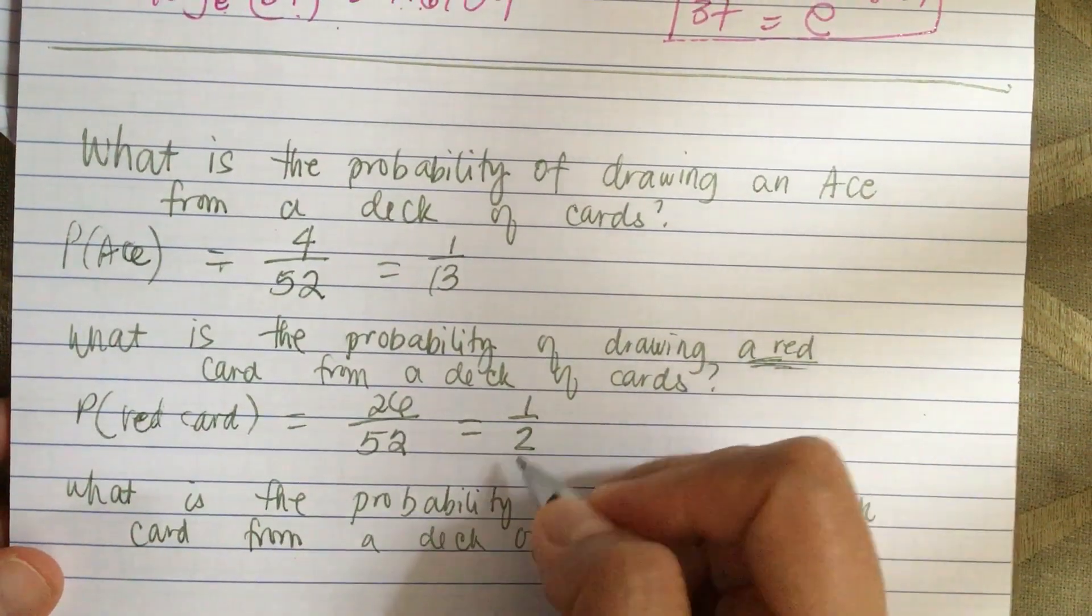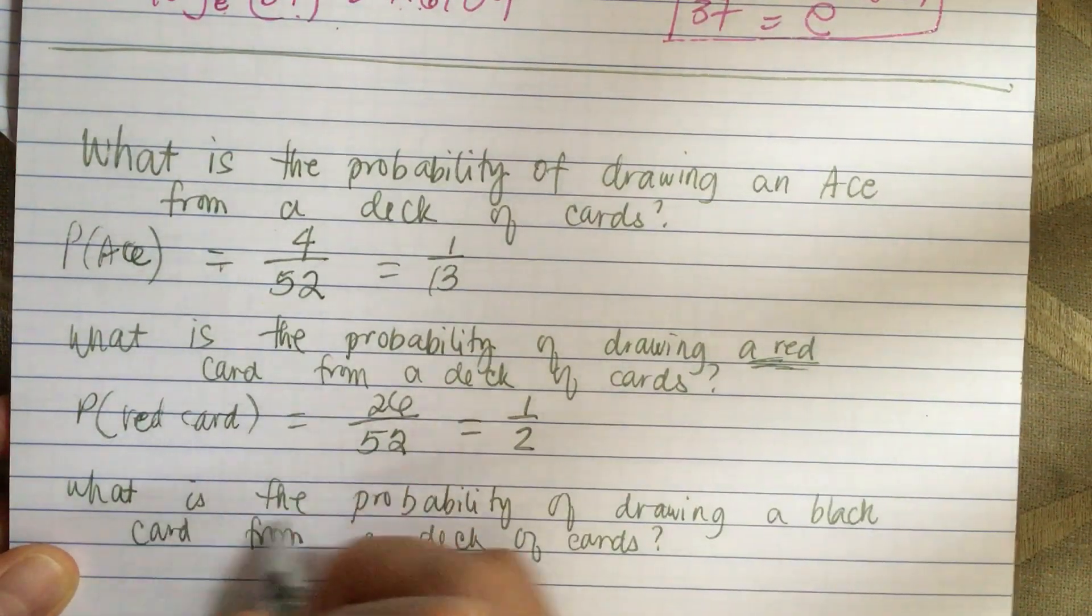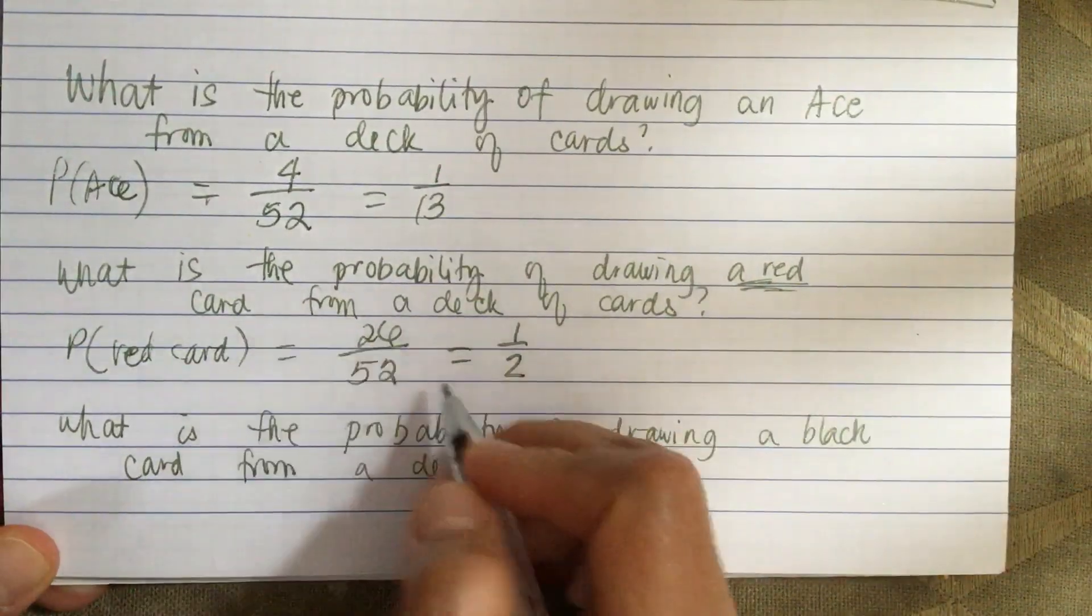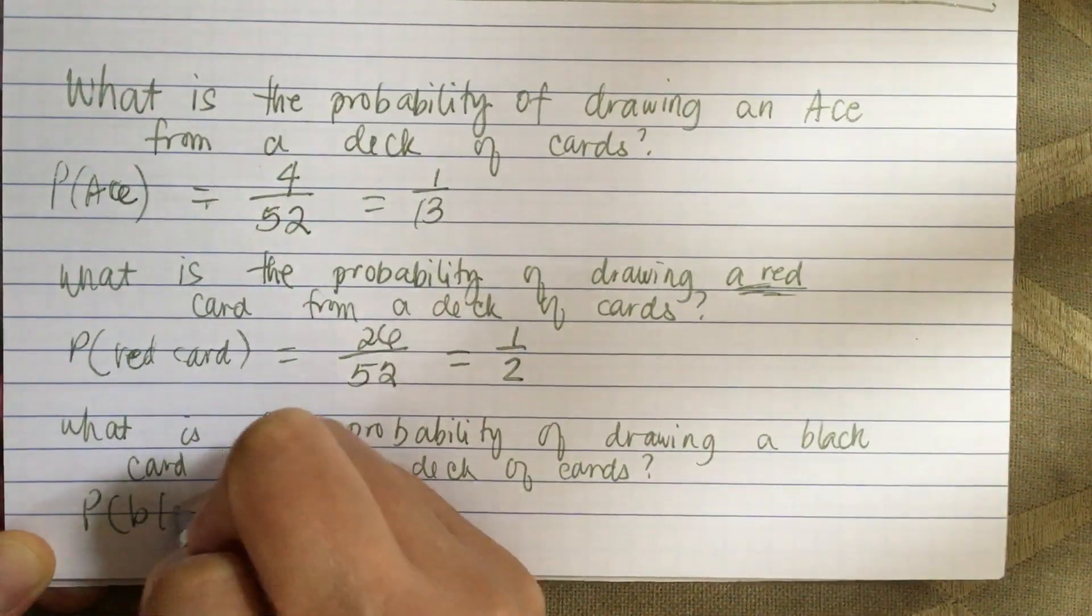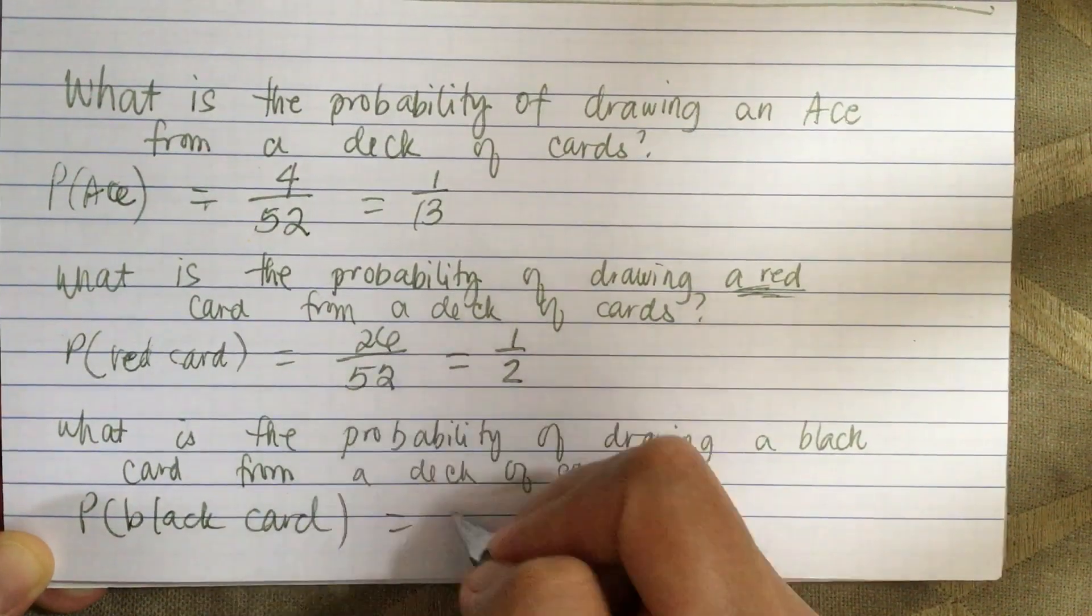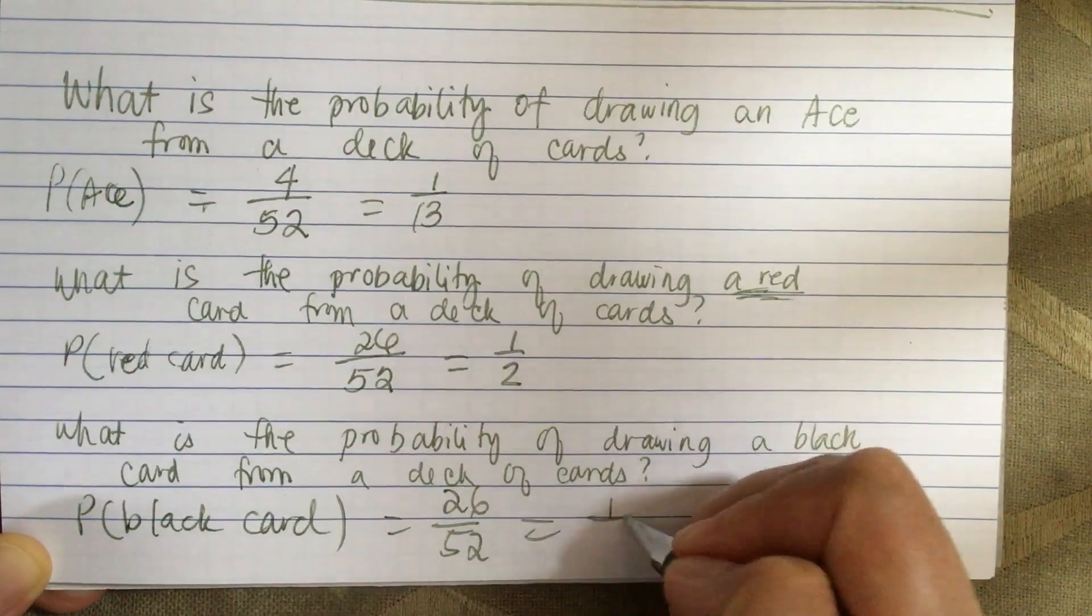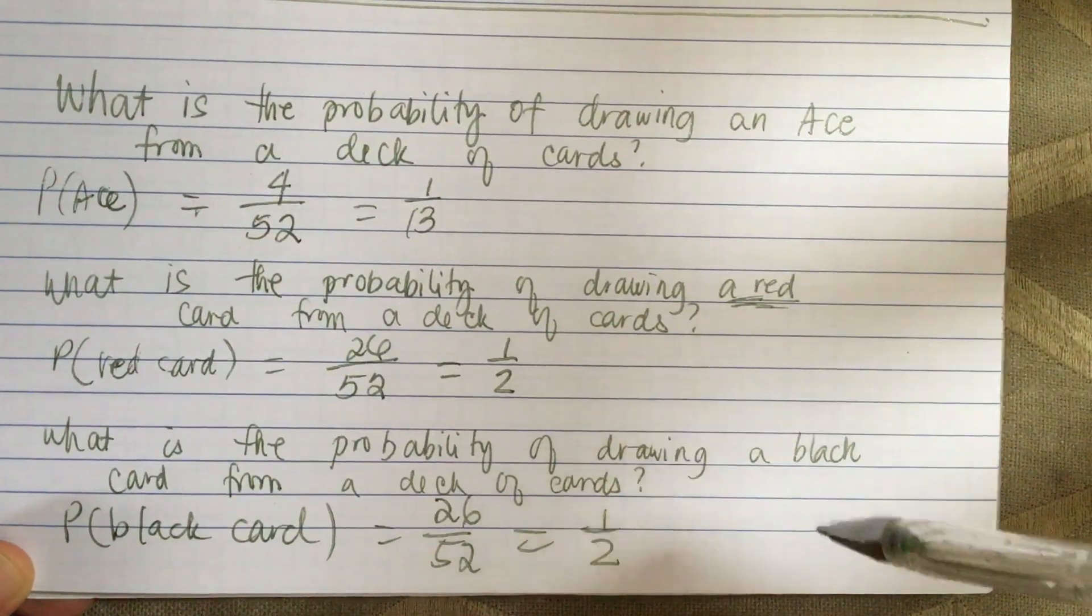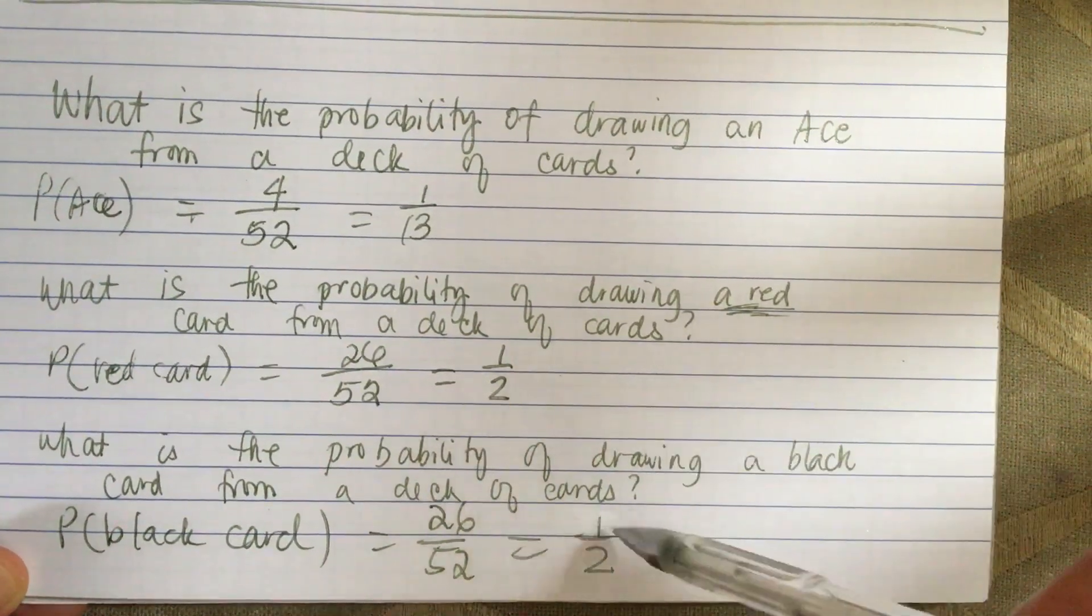Half are red and half are black. What is the probability of drawing a black card from a deck of cards? We just answered this question - it's the same as red. The probability of black card is 26/52, which equals 1/2, because there are equal numbers of red and black cards.